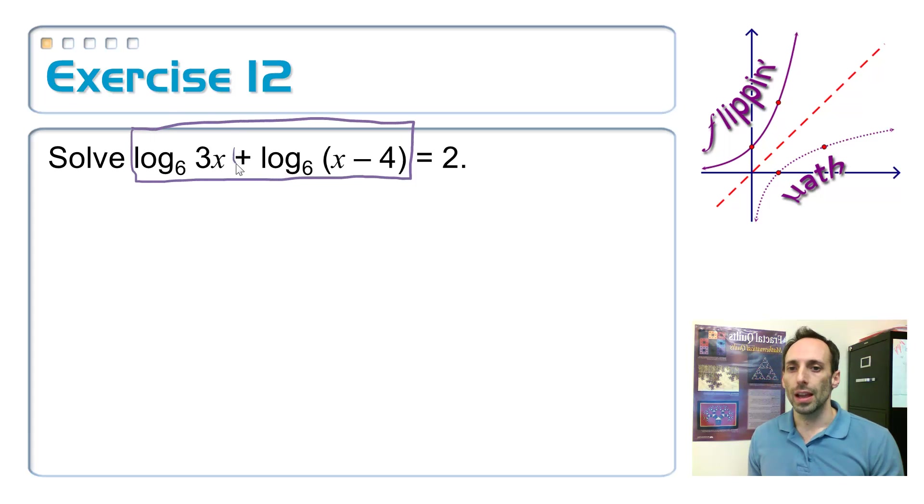It is addition, and I have the same base. Working backwards, that would simplify as the log base 6 of the product of the two things. 3x times x minus 4, and that's equal to 2.